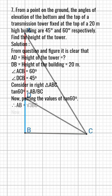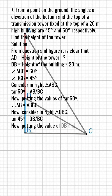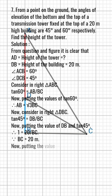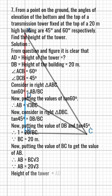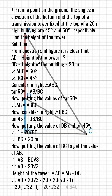Solution. From the question and figure it is clear that AD equals the height of the tower, DB equals the height of the building equals 20m, angle ACB equals 60 degrees, and angle DCB equals 45 degrees.